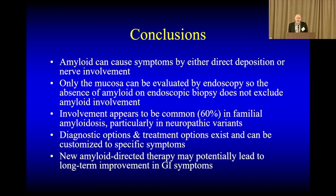In conclusion, we can see GI symptoms with either direct deposition or nerve involvement. Only the very inner layer can be assessed with endoscopy and biopsies, so if biopsies are negative it doesn't exclude amyloid deposition elsewhere in the GI tract. We do see involvement commonly with neuropathic variants, less so with cardiac and wild type. We do have testing options and a number of therapies available. Most of the therapies are not specific to amyloid but more based on symptom relief. But there is some optimism that the newer treatments coming out to treat amyloid will have a long-term benefit in terms of GI symptoms, and we should see more in the next couple of years.